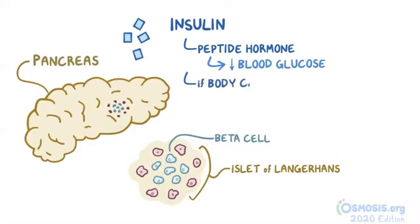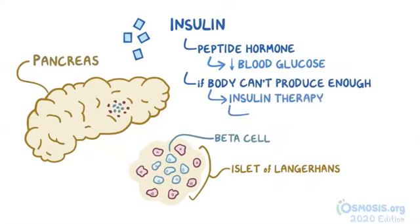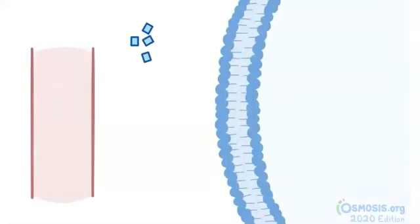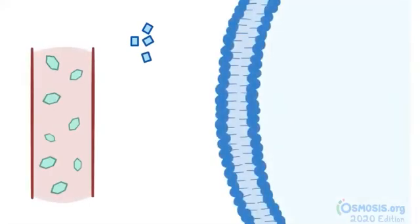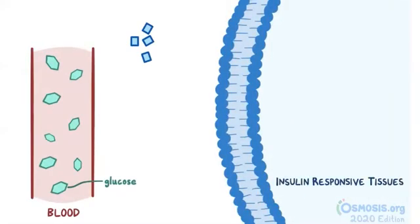If the body is unable to produce enough insulin, then insulin therapy is used to keep the blood glucose low. Insulin's main function is to facilitate the transport of glucose from the blood into the various insulin-responsive tissues like muscle cells and adipose tissue.